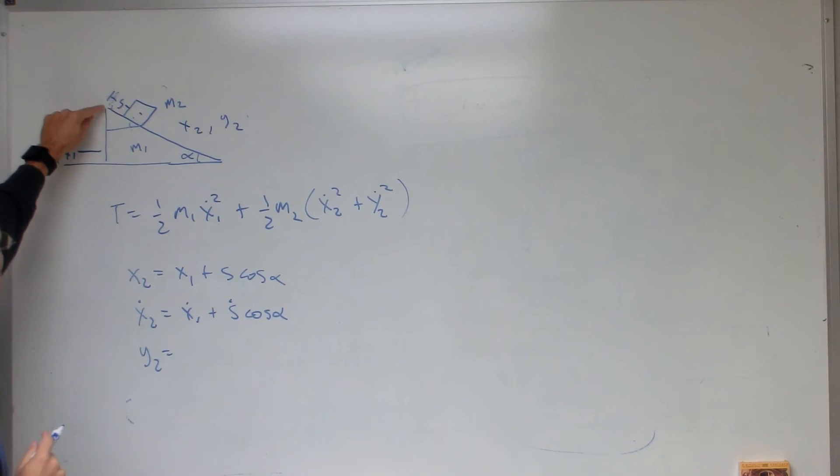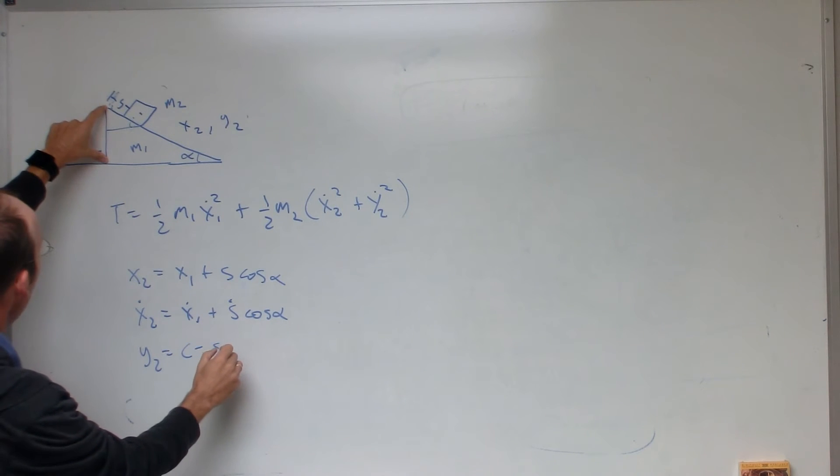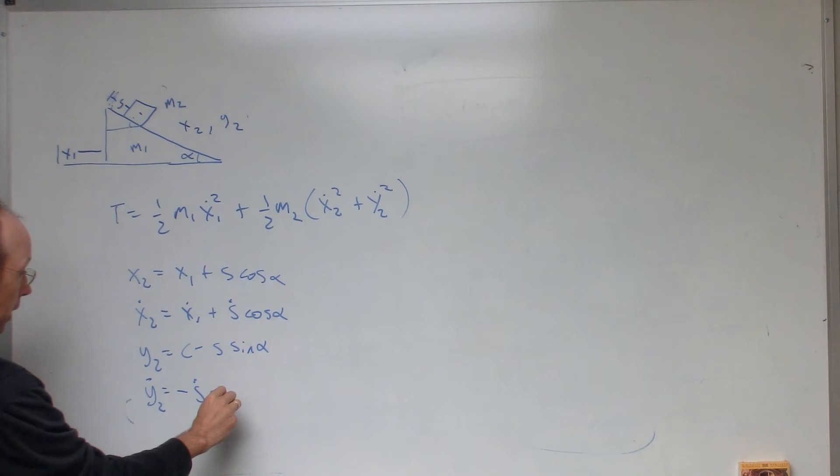And then I can do the same thing for y2. y2 is going to be some constant c, minus s sine alpha. I don't know how high that is. I don't really care. It's not going to matter. Because, I'm going to take the derivative, y2 dot equals, that goes away, and I get minus s dot sine alpha.